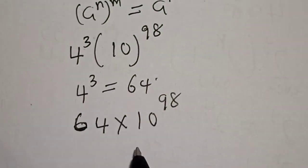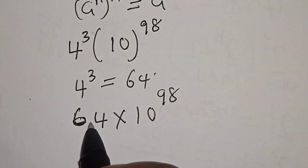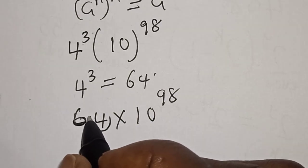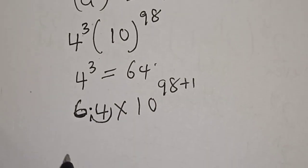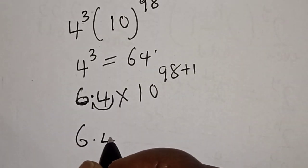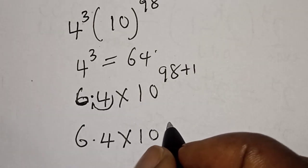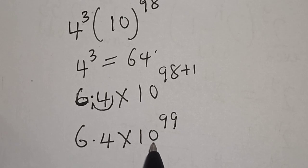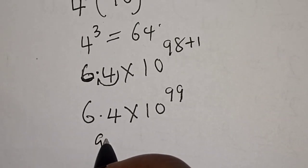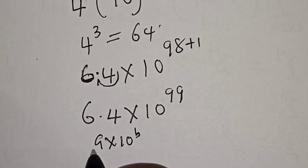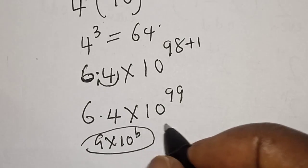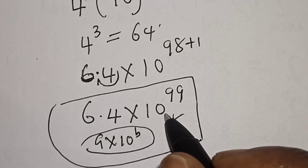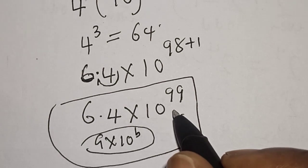So this is 64 multiplied by 10 raised to power 98. Now if we shift the decimal point back once and bring the decimal here, we add 1 to the power, so this becomes 6.4 multiplied by 10 raised to power 99. Remember we want our answer in the form of a multiplied by 10 raised to power b. So our final answer is 6.4 times 10 to power 99. If you love the class, like, share, comment and subscribe. Thank you, bye bye.